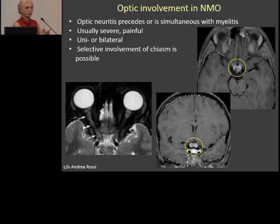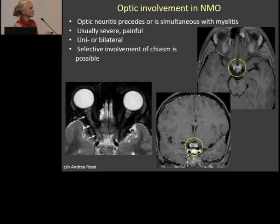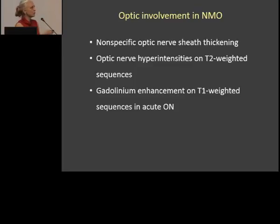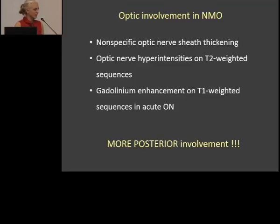How is the optic nerve involved? Different than in multiple sclerosis, it is painful. It can be one side or two sides, and it's usually more dorsal or more posterior than other diseases. Very commonly there is selective involvement of the chiasm. If you see something like that, think neuromyelitis optica — don't think multiple sclerosis. You will have non-specific optic nerve sheath thickening. The nerve will be hyperintense on T2 and will enhance. It is more posterior involvement than in multiple sclerosis.